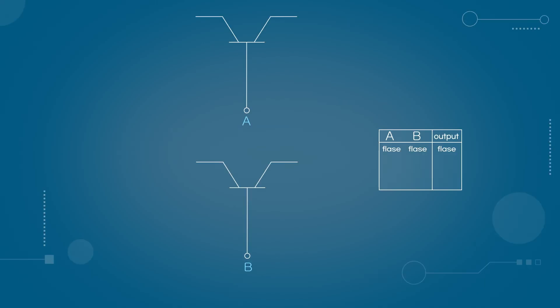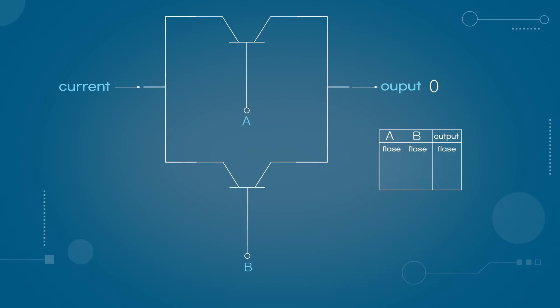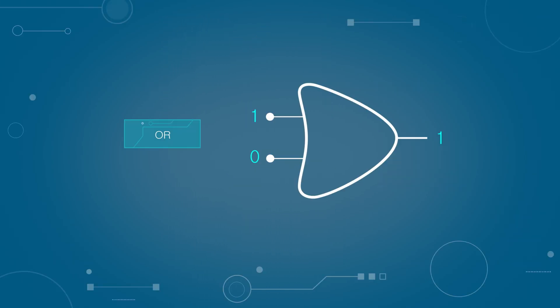Next, let's learn about the OR gate. When transistors are connected vertically like this, current flows if either one or both of the inputs are supplied with voltage. This logic circuit is called an OR gate, and it is abstractly represented with this diagram.